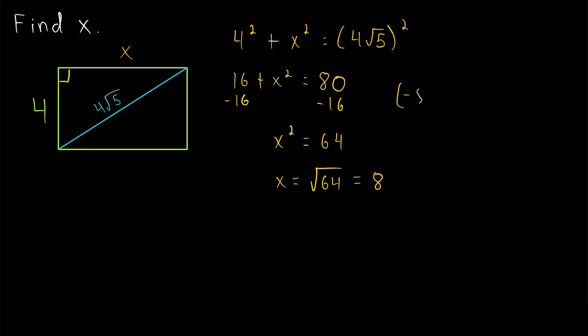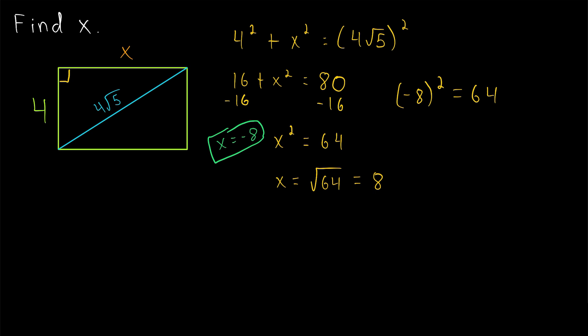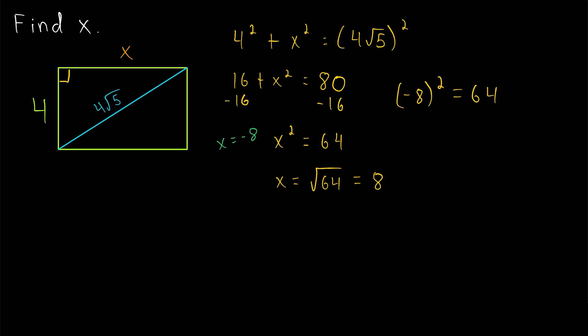Negative 8 squared also equals 64, but we're talking about lengths of a shape so we need positive measurements. Also, the square root notation — the principal square root — refers specifically to the positive square root, so positive 8 is our answer. 8 is the missing side length of this rectangle.